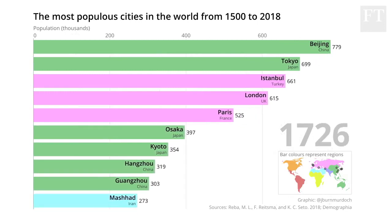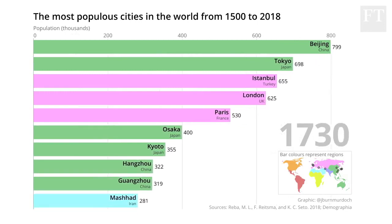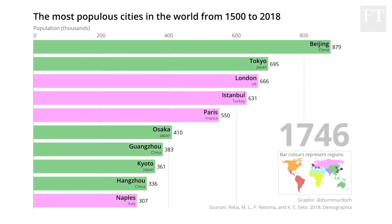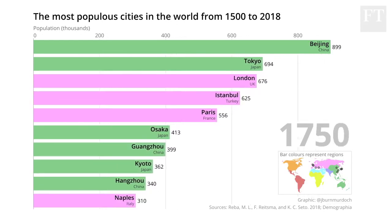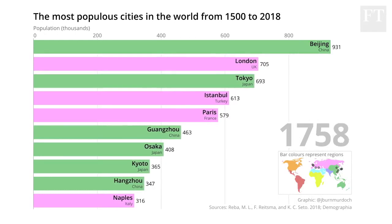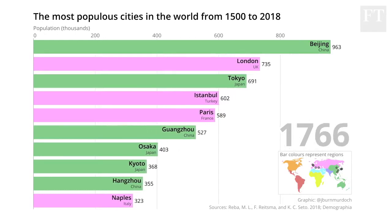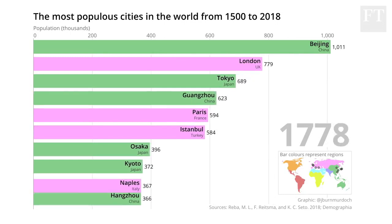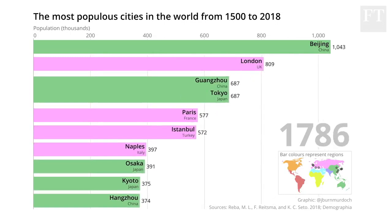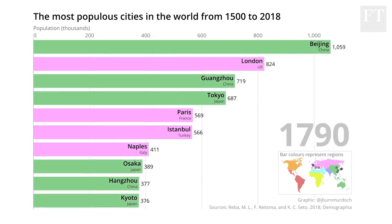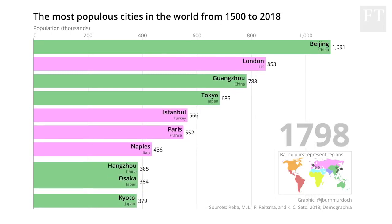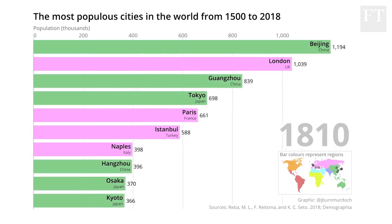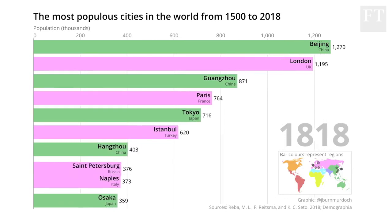In the later 1700s the Industrial Revolution took hold. London is already among the top three cities in the world — keep an eye on that horizontal axis over the next few seconds. London is still under a million people, but as the 18th century turned into the 19th it shot forward over a million.